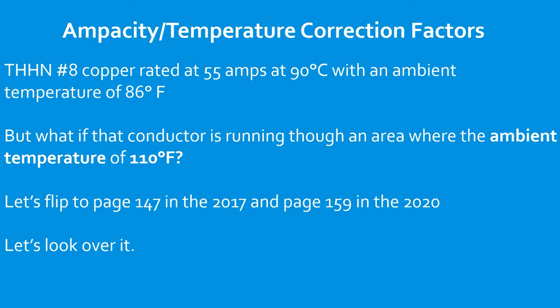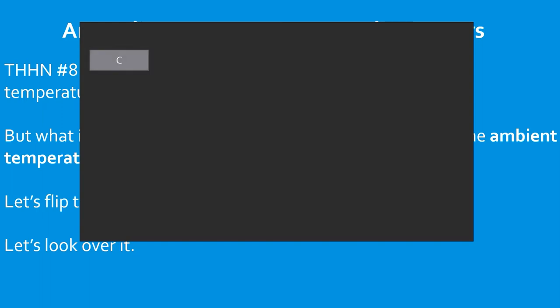The heading says: 'Ambient Temperature Correction Factors Based Off of 86 Degrees Fahrenheit' — that coincides with our primary ampacity table. We always read our tables from top to bottom, left to right, using the black bold headings to navigate. It says: for ambient temperatures other than 86°F, multiply the ampacities specified in the ampacity tables by the appropriate correction factor. Think of these as demand factors — we multiply.